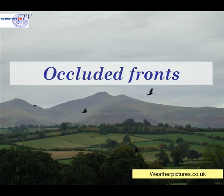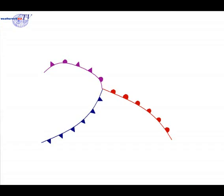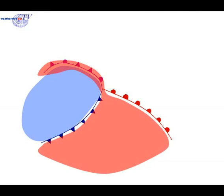This video is about occluded fronts. An occluded front occurs where the cold air associated with a cold front catches up with the warm air associated with a warm front, and this forms an occluded front.